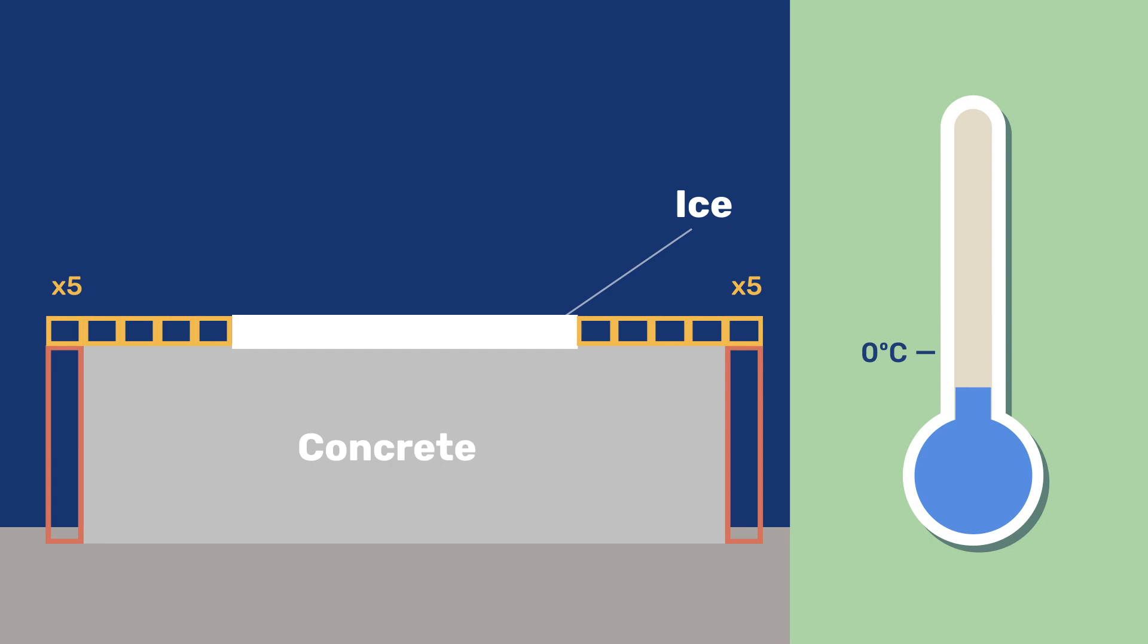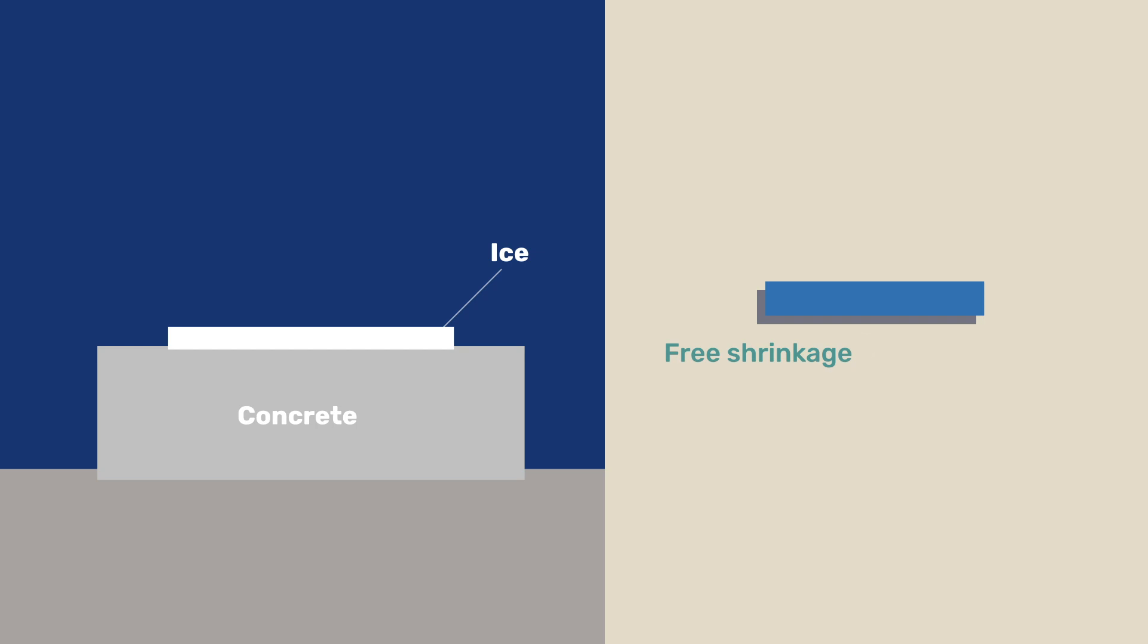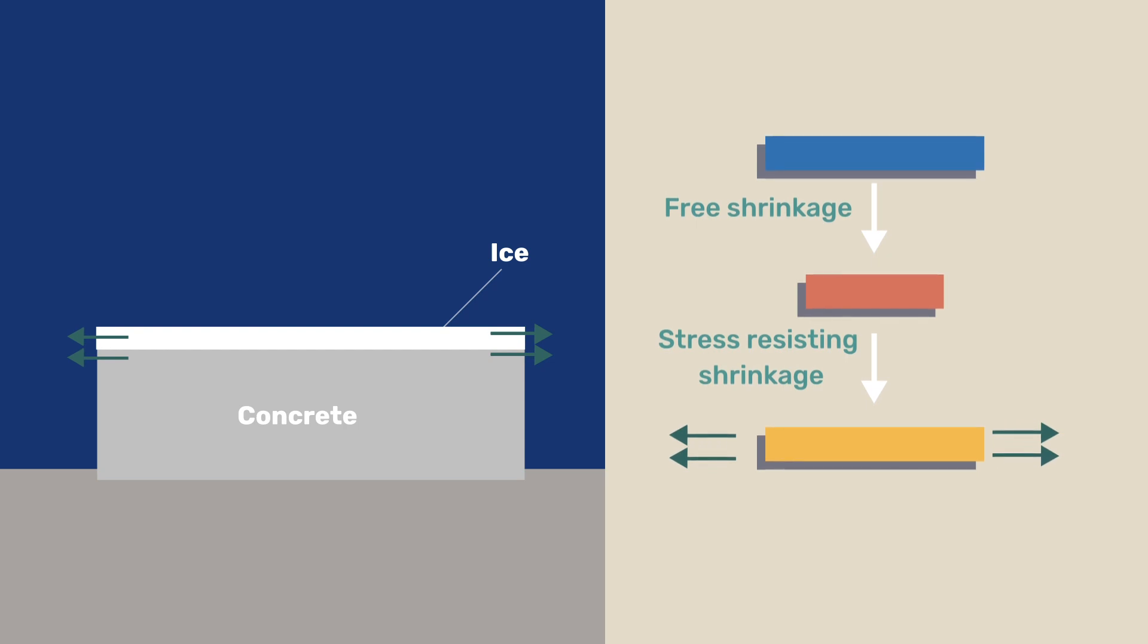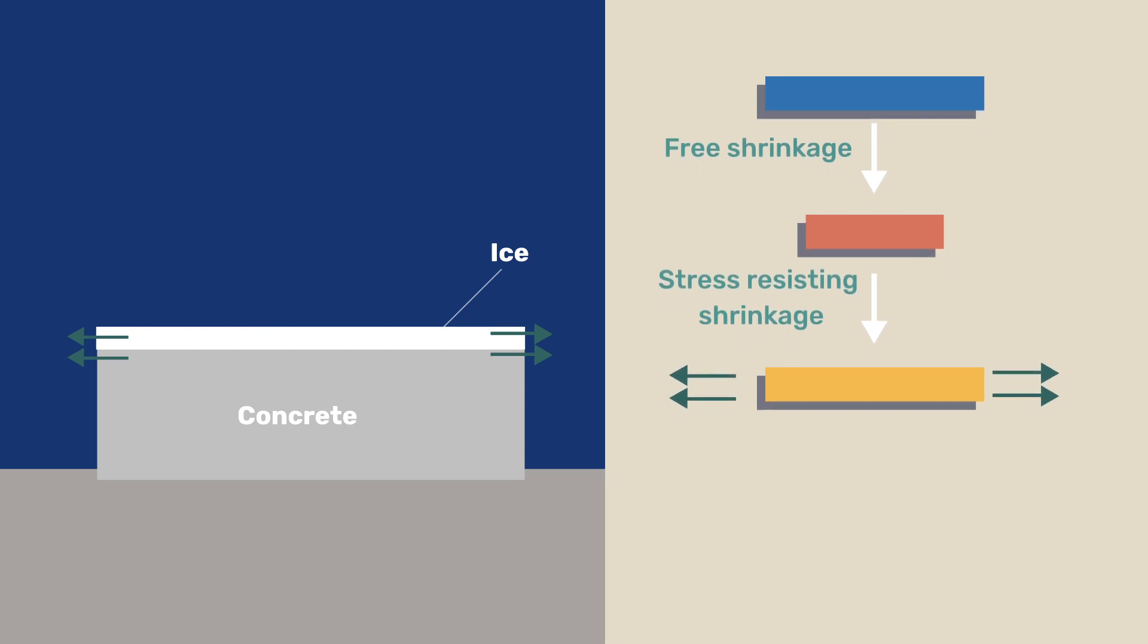Let us simply consider the ice layer. If left alone, its free shrinkage upon cooling would be substantial. However, being bound to the thicker concrete, the ice layer is restrained from shrinkage and finds itself in tension.